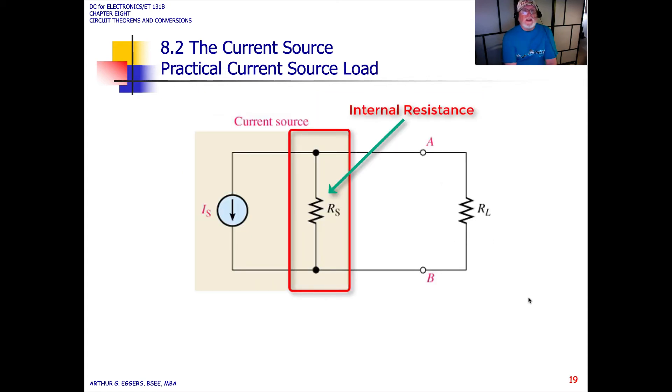In the case now of a practical current source, as opposed to an ideal, you'll notice that we have added an internal resistance. Instead of the resistance being in series with the load, the internal resistance is placed in parallel or shunt with the load.